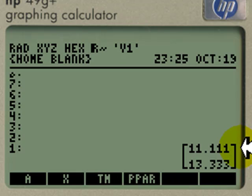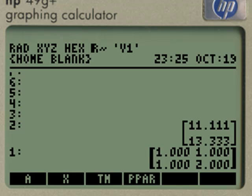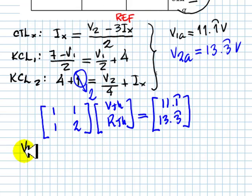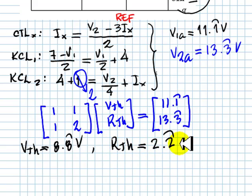Here are V1A and V2A. Divide that by the 1, 1, 1, 2 matrix, and we obtain V Thevenin, 8.8 periodic, and R Thevenin, 2.2 periodic. V Thevenin, 8.8 volts periodic, and R Thevenin is 2.2 ohms periodic.